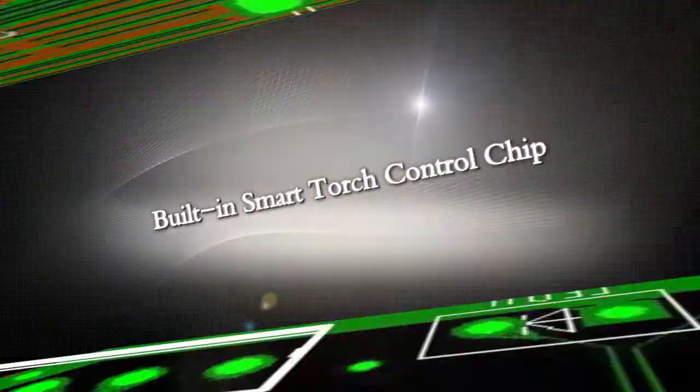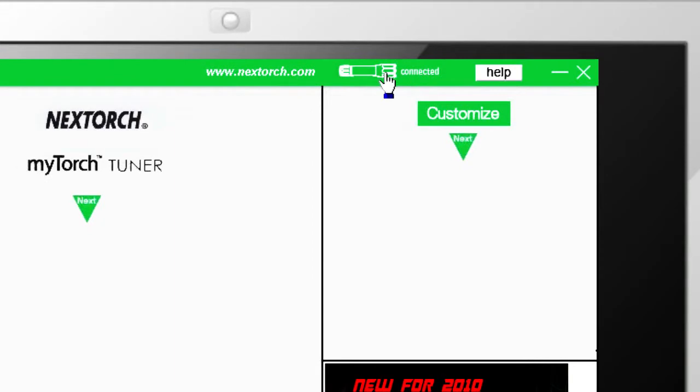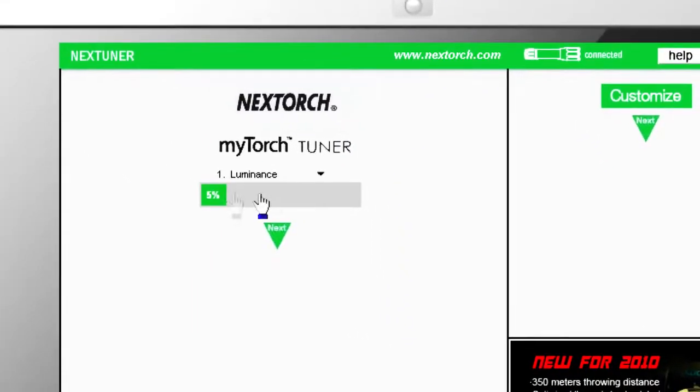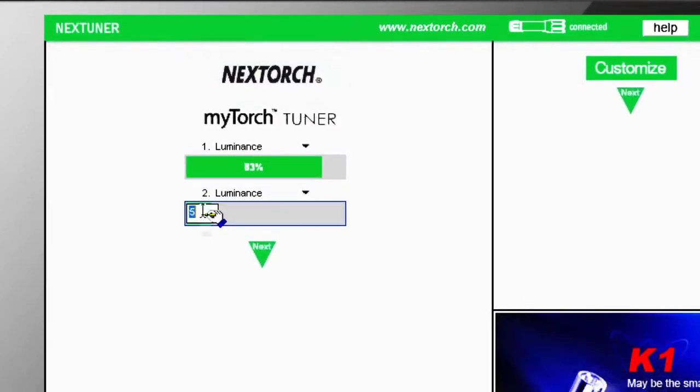MyTorch is operated on its built-in Smart Torch Control Chip (STCC) system. While the device is connected to a computer, the system is controlled by software which enables the user to program a series of mode combinations of their choice through this visual software platform.